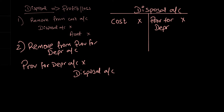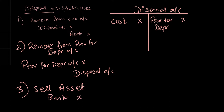The next step is to sell this asset — record the sale of the asset. If you're selling it through bank, bank should be debited since we're receiving money. Bank goes up, and I will credit the disposal account with the disposal proceeds. On the credit side you write bank — you sold off this asset for this value.